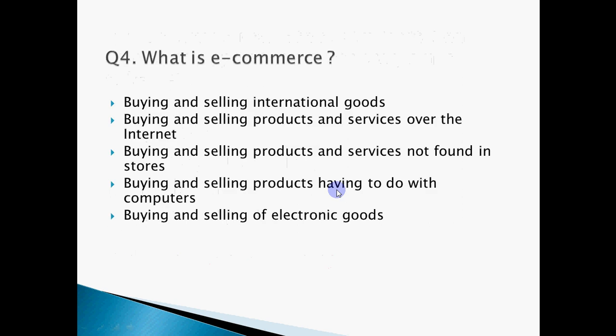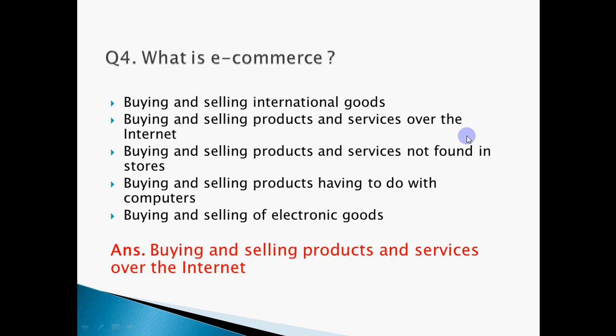Fourth question: What is e-commerce? You are given five statements and need to identify which is true. E-commerce means buying and selling products on the internet — like Flipkart, Myntra, or Amazon. Evaluating each option: 'buying and selling international goods' is wrong (it can be any goods). 'Buying and selling products and services over the internet' — yes, that is e-commerce. Options about goods not found in stores, or only computer goods, or only electronic goods are all incorrect. The correct answer is: buying and selling products and services over the internet.